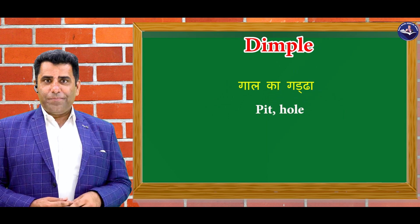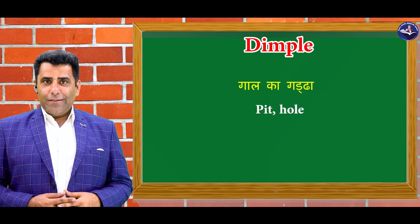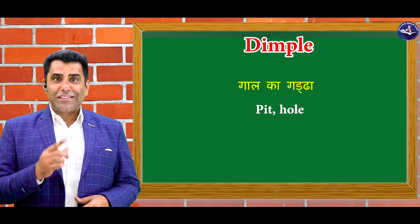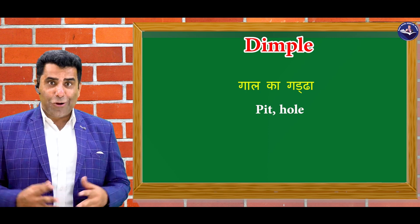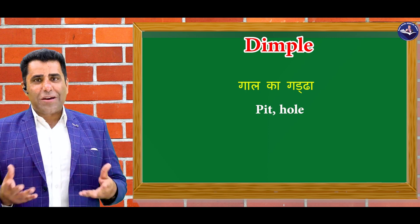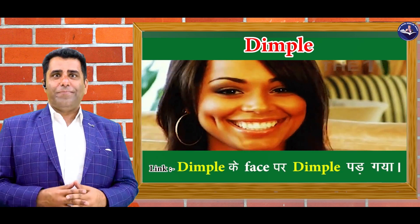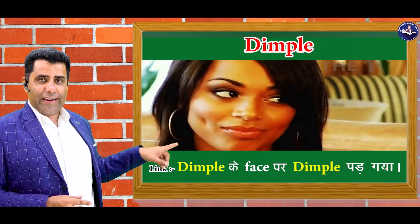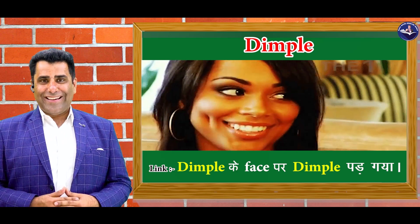And the second word is dimple — gaal mein gadda pad jana. Zyattar girls mein aisa hota hai, gaal pe gadda sa pad jata hai, so ke dimple. Toh dimple toh ek naam bhi hai girls ka, aur ek heroine bhi hai dimple. Toh woh naam hi humara link word hai — Dimple ke face pe dimple pad gaya. Gadda pad gaya, pitted hole. Toh dimple naam ki jo ladki hai, dimple ke face pe dimple pad gaya.